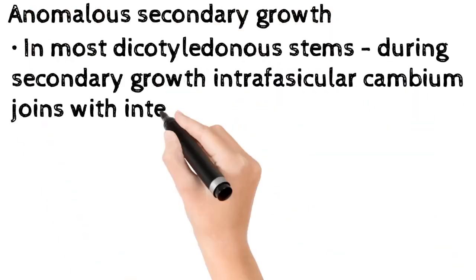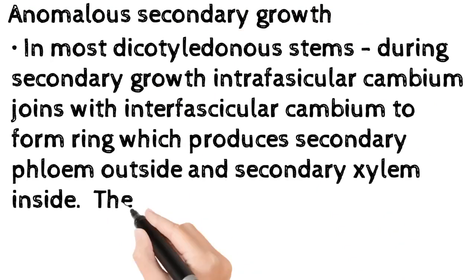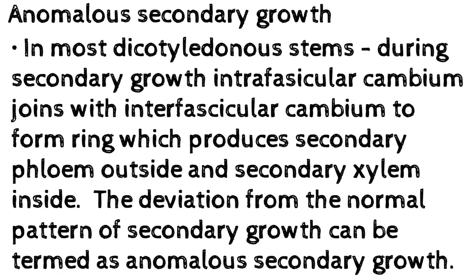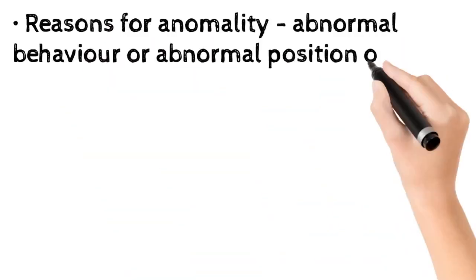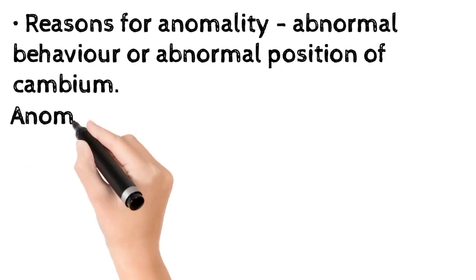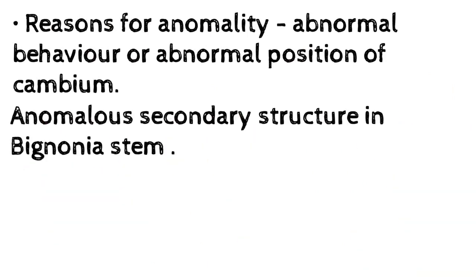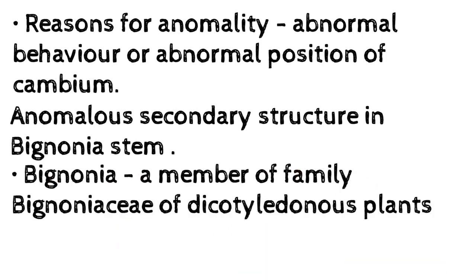In most dicotyledonous stems during secondary growth, intrafascicular cambium joins with interfascicular cambium to form a ring which produces secondary phloem outside and secondary xylem inside. The deviation from this normal pattern of secondary growth is termed anomalous secondary growth. Reasons for anomaly include abnormal behavior or abnormal position of the cambium.